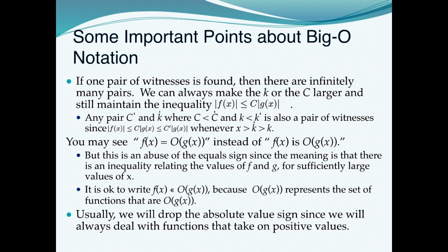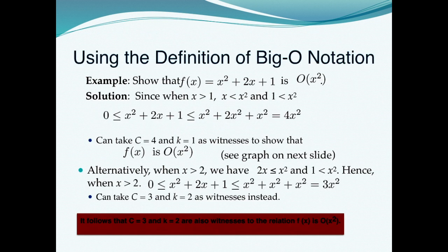That is not a full equality — it is only an estimation of how things could go. It is also correct to write f(x) ∈ O(g(x)) because Big O of g(x) can be represented as a set. For the domain of f(x) we normally drop the absolute value sign, since we always deal with functions that take only positive values — meaning zero or more input size, and any program should take at least one or more inputs.